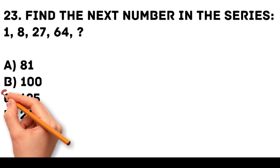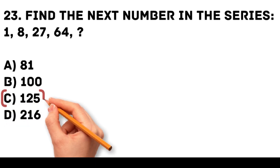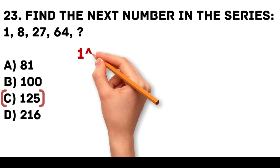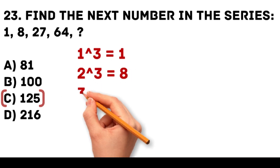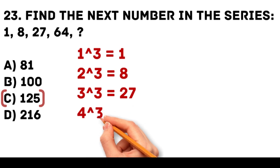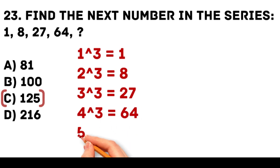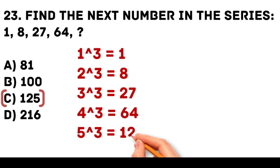Answer: C. 125. The series represents the cubes of natural numbers. 1 cubed equals 1. 2 cubed equals 8. 3 cubed equals 27. 4 cubed equals 64. 5 cubed equals 125.